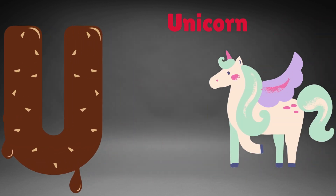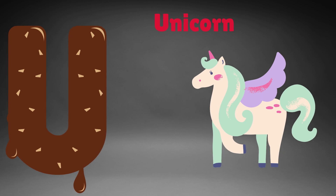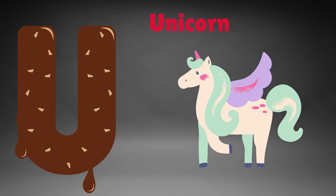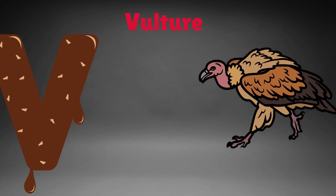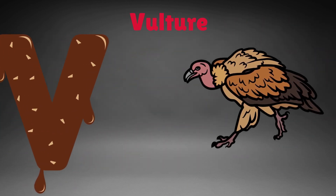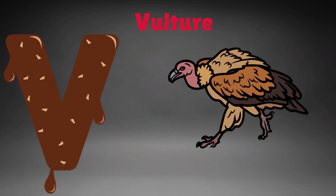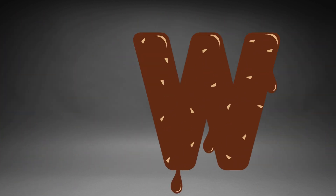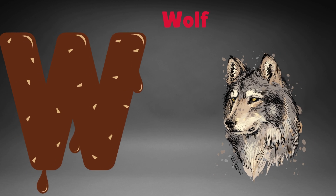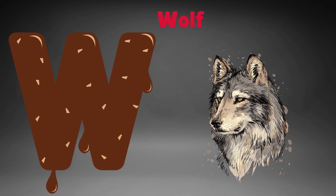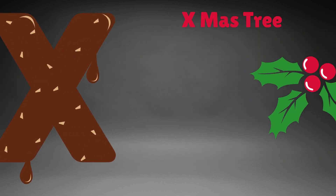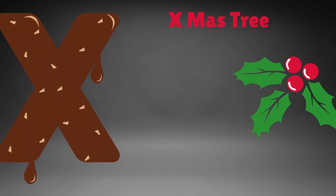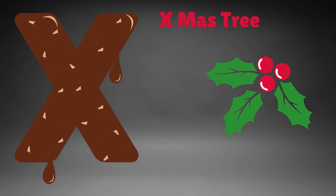U is for unicorn, u-u-unicorn. V is for vulture, v-v-vulture. W is for wolf, w-w-wolf. X is for x-moss tree, x-x-moss tree.